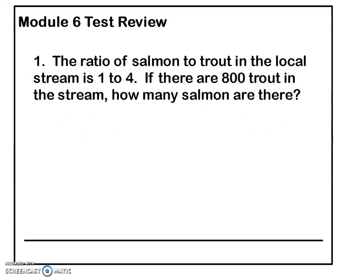Number one: the ratio of salmon to trout in the local stream is one to four. If there are 800 trout in the stream, how many salmon are there? Sometimes kids look at a problem like this and they're not sure if they're supposed to multiply or divide. So what I always ask them to do is set the problem up. You should notice that they put salmon first and trout second, so the ratio would be from salmon to trout. The first number is one for salmon, and four for trout — there's one salmon for every four trout.